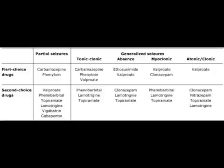Valproate is the first line drug for myoclonic, atonic, and clonic seizures — this is very important to remember. Now for second choice drugs: in partial seizures, the second line options are valproate, phenobarbital, topiramate, lamotrigine, vigabatrin, and gabapentin.